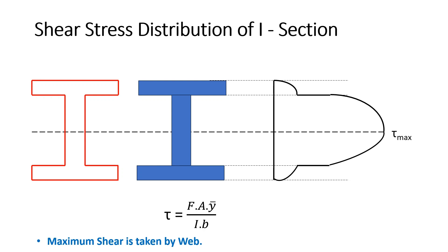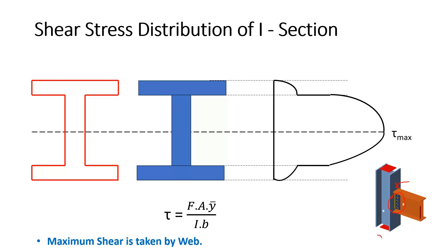From this, you can say that if you want to provide a shear connection between a beam and a column, you should connect the web of the beam with that of the column. Only the web of the beam is connected; there is a gap between the flanges of the beam and the column. So this connection is a shear connection and it will transfer only shear force.